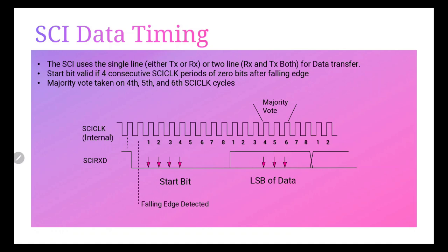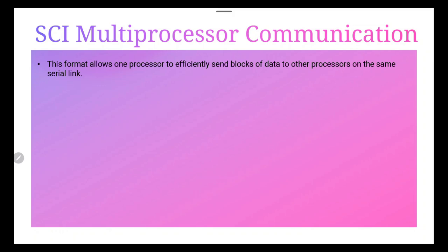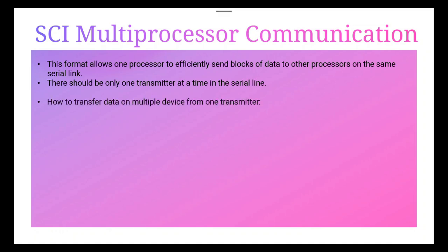SCI multiprocessor communications allows one processor to efficiently send a block of data to another processor over the same serial link. There should be only one transmitter at a time on the serial line, but there can be multiple receivers. To transfer data to multiple devices from one transmitter, an address bit is used. This address is read by all receivers, and the receiver that matches the current address will go to interrupt.